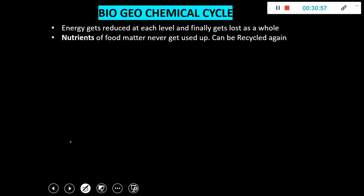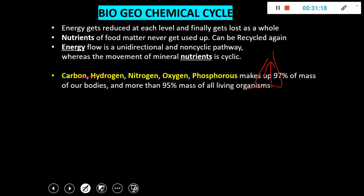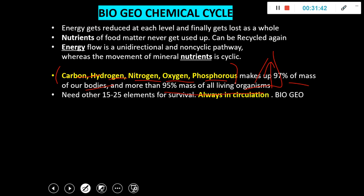Succession is the universal process of directional change in vegetation over ecological time. It involves a series of communities replacing one another due to large-scale natural or man-made destruction, until a stable climax community appears through stages called seres. The first stage is called the pioneer community, followed by different seral stages, culminating in the climax community. Succession is characterized by increased productivity, a shift of nutrients from reservoirs, increased diversity, and niche development.